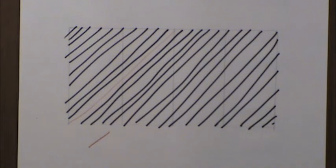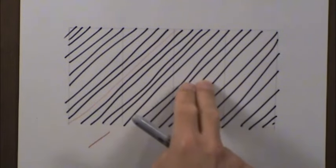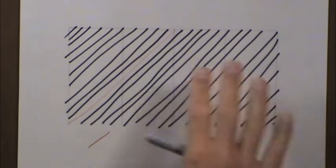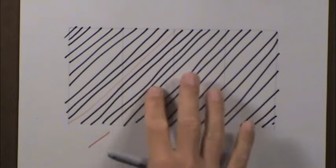Remember, cross hatching is all about keeping lines parallel and then overlapping other parallel sets of lines. That's what's going to make it look like areas that are lighter and darker.